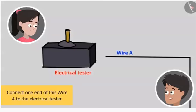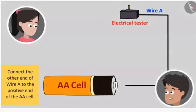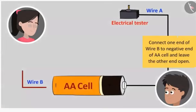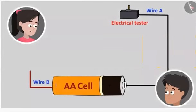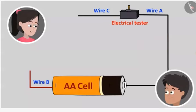First, connect one end of this wire A to the electrical tester. Done. Now connect the other end of wire A to the positive end of the AA cell. Done that. Now connect one end of wire B to the negative end of the AA cell and leave the other end open. Okay, done. Finally, connect one end of wire C to the electrical tester and keep the other end open. And our circuit is ready.